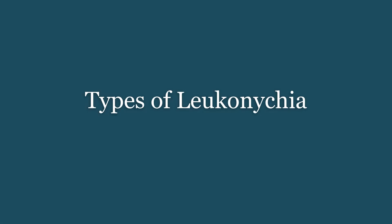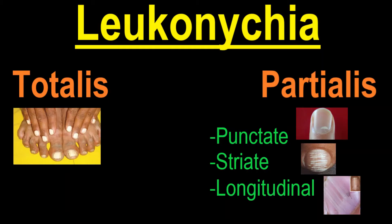Let's talk now about types of leukonychia. This is the general picture of leukonychia classification. There are two big categories: leukonychia totalis and leukonychia partialis. The partialis type itself can be divided into three different subtypes: punctate leukonychia, striate leukonychia, and longitudinal leukonychia. Let's discuss each category in a little more detail.